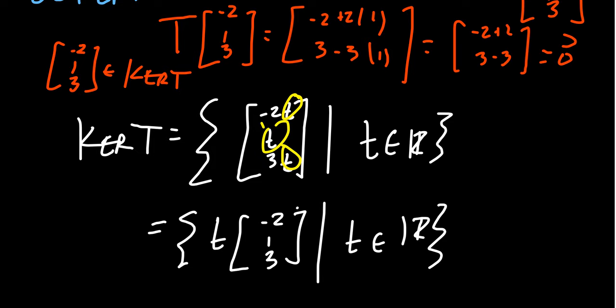For the meanwhile though, I just want to show us how one could compute, I should say, the set of vectors that map to zero, a.k.a. the kernel of the transformation.